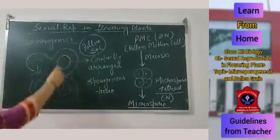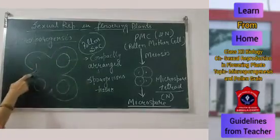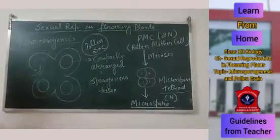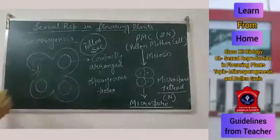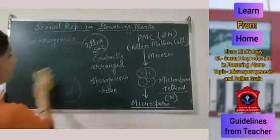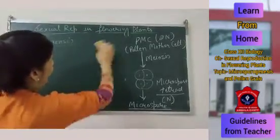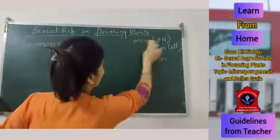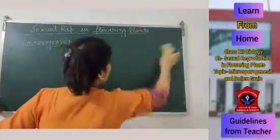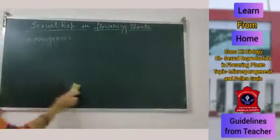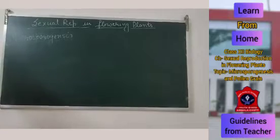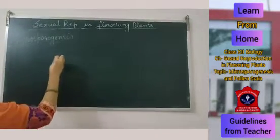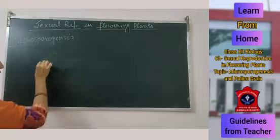When the wall of the sporangium breaks down, the microspores are released out through the dehiscence of the anther. Now we are coming to the structure of the pollen grain. After separation, the microspore is known as a pollen grain. The pollen grain is a round structure.